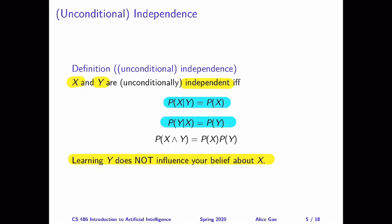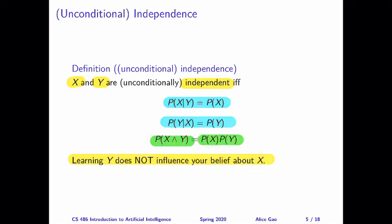The third formula is a little different. It says the joint probability of x and y is equal to the product of the marginal or prior probability of x multiplied by the prior or unconditional probability of y. So the first two and the third are two different ways of expressing this definition, and there's an easy way to convert between the two — they are equivalent ways of expressing the same thing.